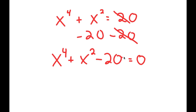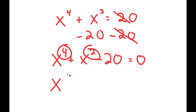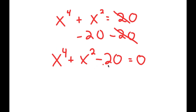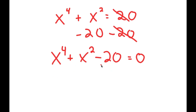Now this may seem like a quadratic equation, but it's not because we have the power of 4 as our primary term, and then that's followed by the power of 2. In a normal quadratic equation, we have 2 as our primary, then we just have 1, and then we have some constant c. So we can't factor this using the quadratic formula because this is not a quadratic equation.